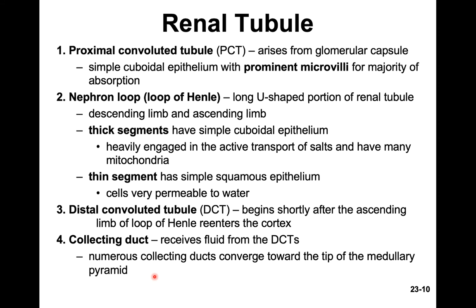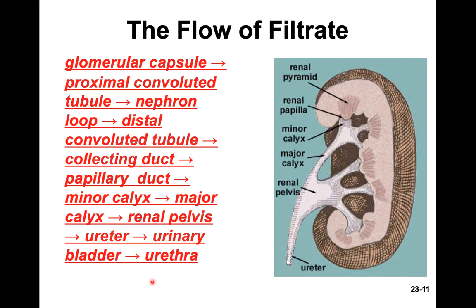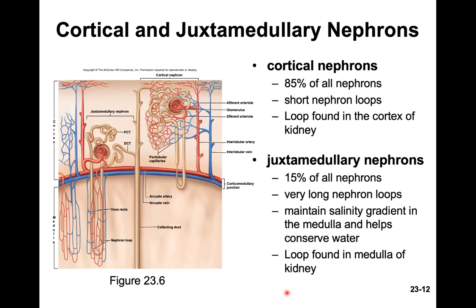Here is the pathway: filtration starts at the glomerulus, then we enter the PCT, then the loop of Henle, then the DCT, then the collecting duct. After the collecting duct we enter the papillary duct, which collects all the urine into the minor calyx, then the major calyx, then the renal pelvis, and out the ureter to the bladder, eventually urinating out through the urethra. There are two types of nephrons found in different regions of the kidney.